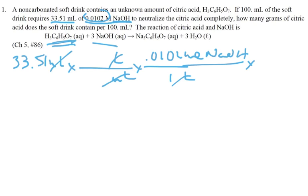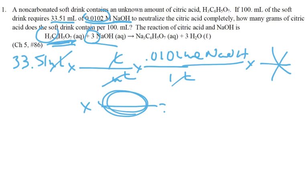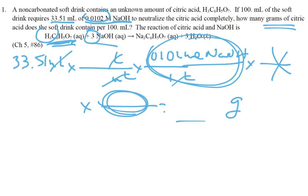And if I know moles of citric acid, I can find grams of citric acid. So I'll use the moles-to-moles ratio from the balanced equation — 3 to 1 — and then the molar mass of citric acid. When I'm all done, I'll have grams of citric acid. So the key point is: use molarity as a conversion factor, the balanced equation coefficients as a conversion factor, and the molar mass of citric acid.